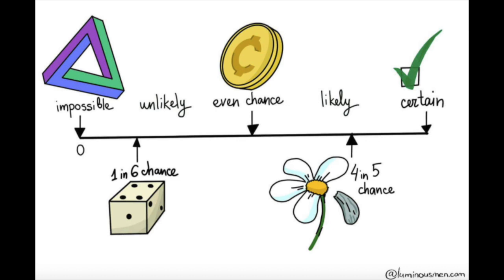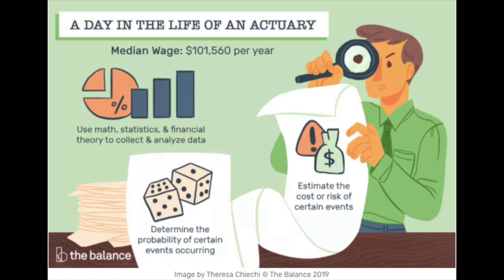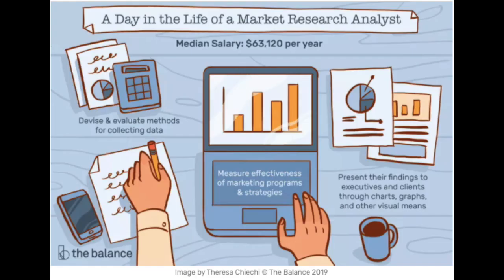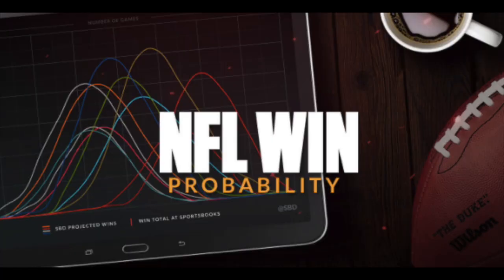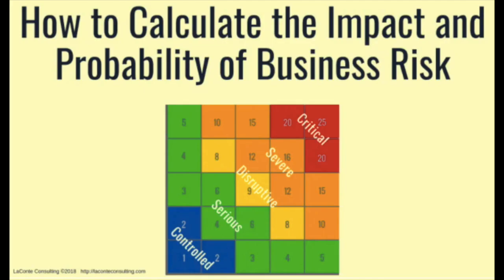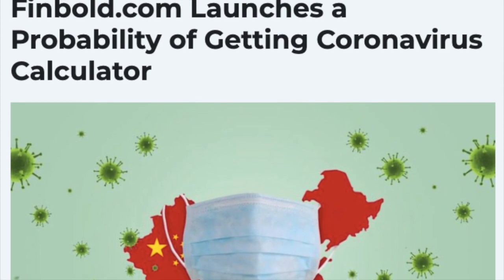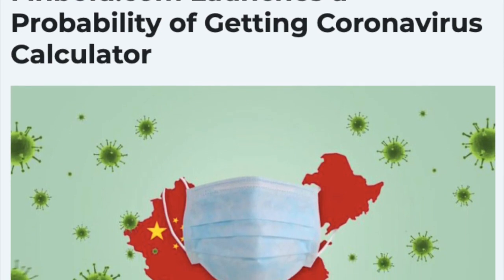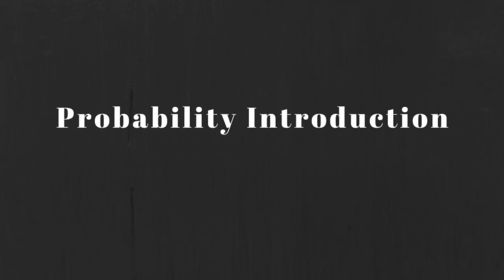What is the likelihood of an event occurring? When we calculate probability, we determine how likely it is that a particular event or events will occur. While certain professions do this for a living, probability appears in many other aspects of daily life, such as weather, sports, insurance, business, or medicine. Knowing how likely an event is to occur is useful when making decisions.